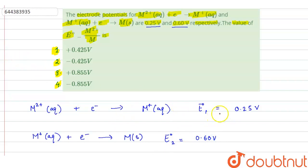Now, if we find out the Gibbs free energy change for these reactions, then the standard Gibbs free energy change ΔG⁰₁ for this first reaction would be -nFE⁰_cell. So here we have 0.25V, so we can write here E⁰₁.